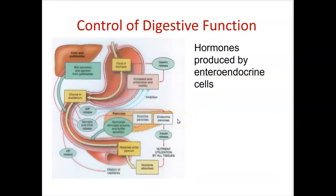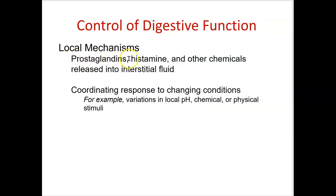Local factors can include pH in the area, whether the organ is stretched, histamine — which also controls the amount of hydrochloric acid released by your stomach — and prostaglandins, which are hormone-like molecules that work at the site of release rather than traveling through the blood. Other local factors include changes in pH, physical stimuli like stretching, or chemical stimuli like caffeine. This concludes our lecture on the introduction to the digestive system.